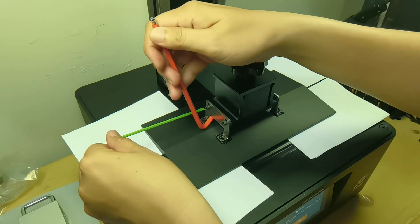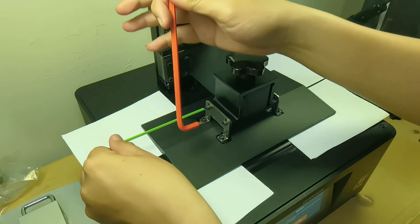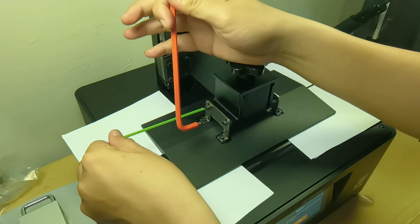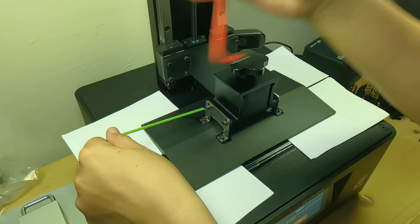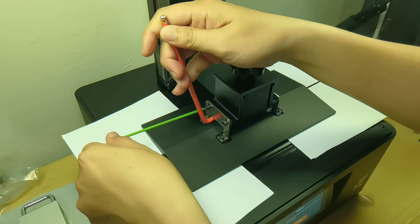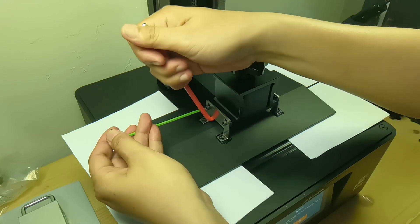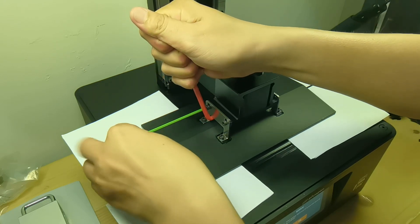With the help of another Allen key, I will place my hand. Remember, just place your hand here, do not apply any weight because you don't want to damage your Z tower. Loosen this bolt, then pull up and then tighten.